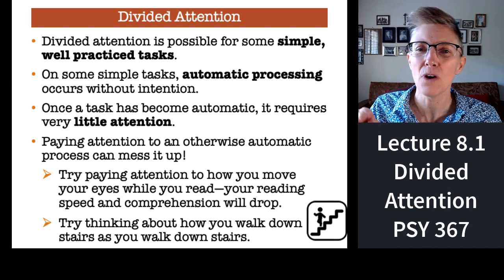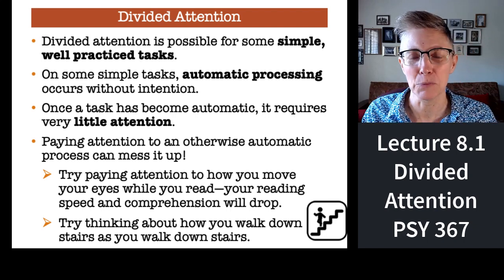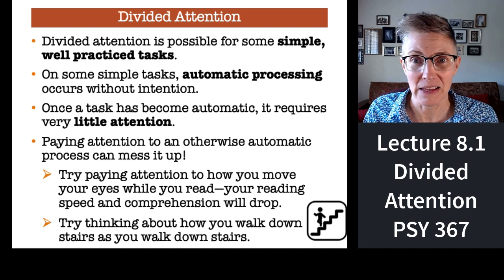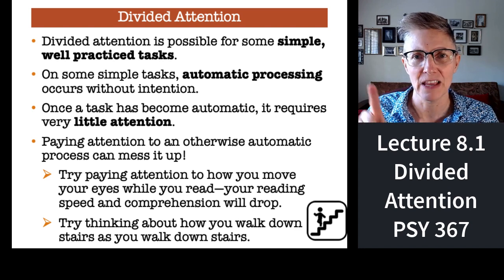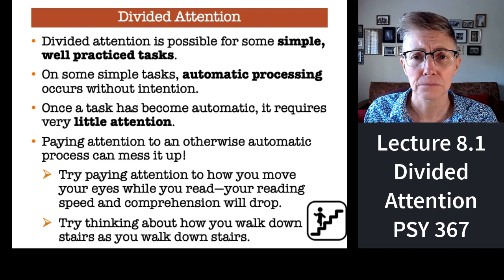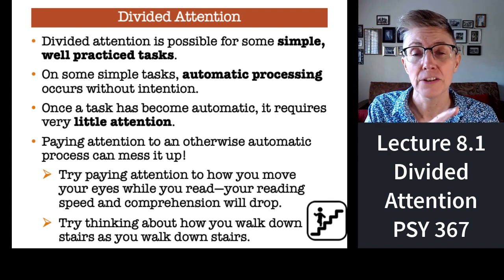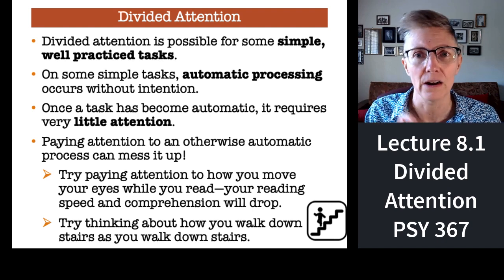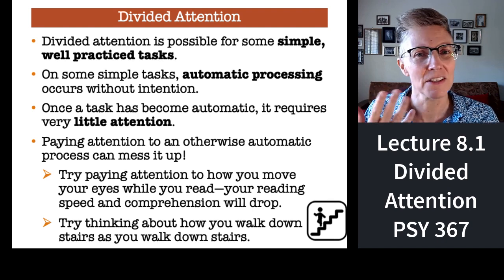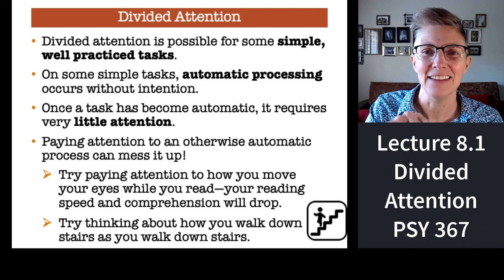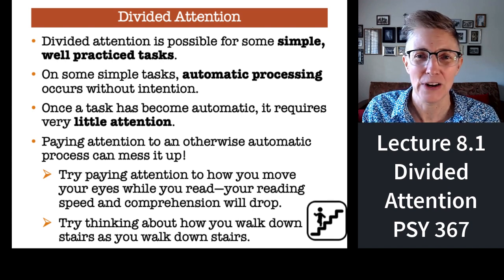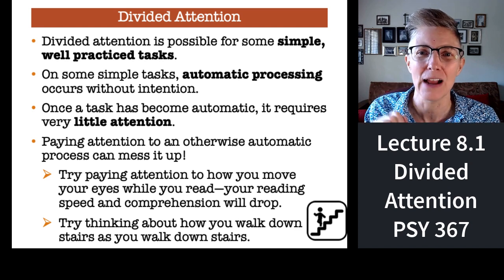In fact, if you try to pay attention to an automatic process, everything gets messed up. Try this: next time you're reading something, think about the eye movements you're making. You don't fixate every word — it's a complicated process your visual system goes through to figure out which words to fixate and where and for how long. That's an automatic process because you are an expert reader. But try to attend to that automatic process and you'll find it's a train wreck — you cannot read and pay attention to your eye movements at the same time.